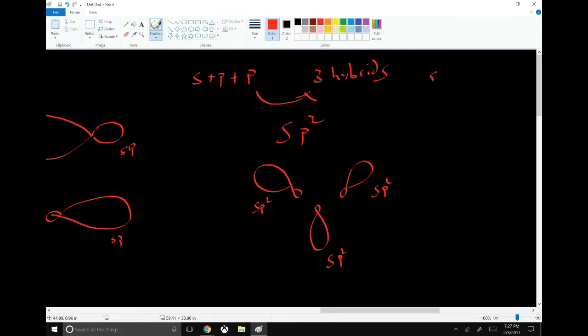And of course you can do s plus p plus p plus p, and you get an sp3 hybrid. And now it points up and down, left and right. That looks terrible, but the point is that you have these four hybrids, all exactly the same except they're pointing in different directions.